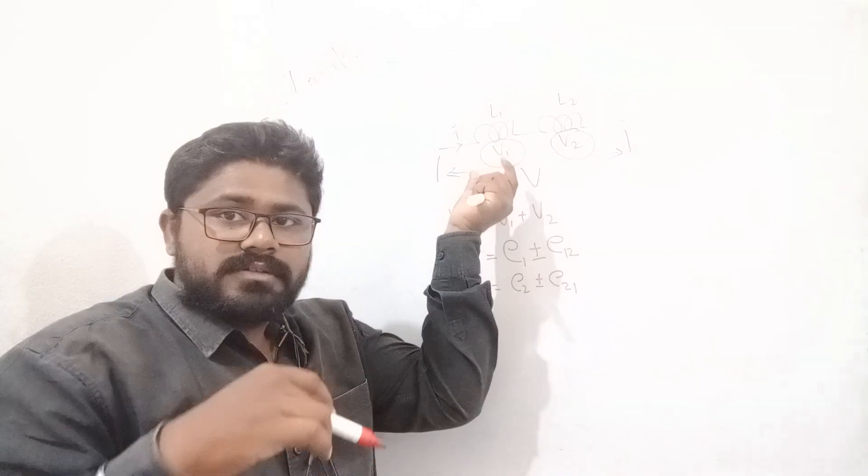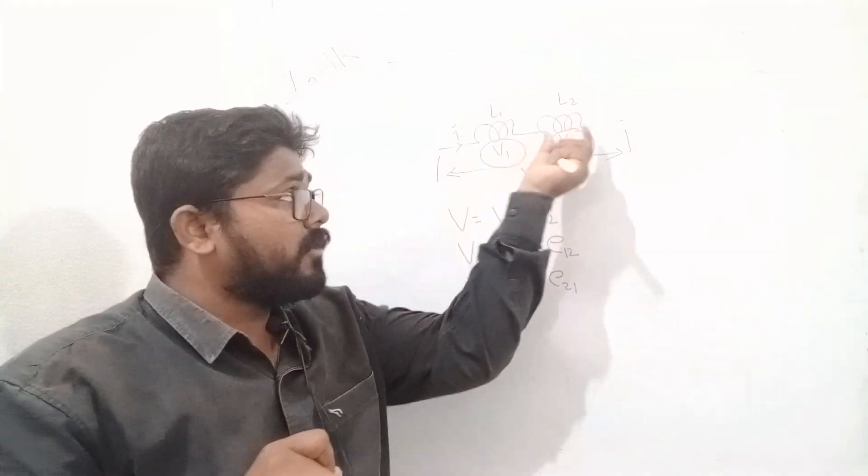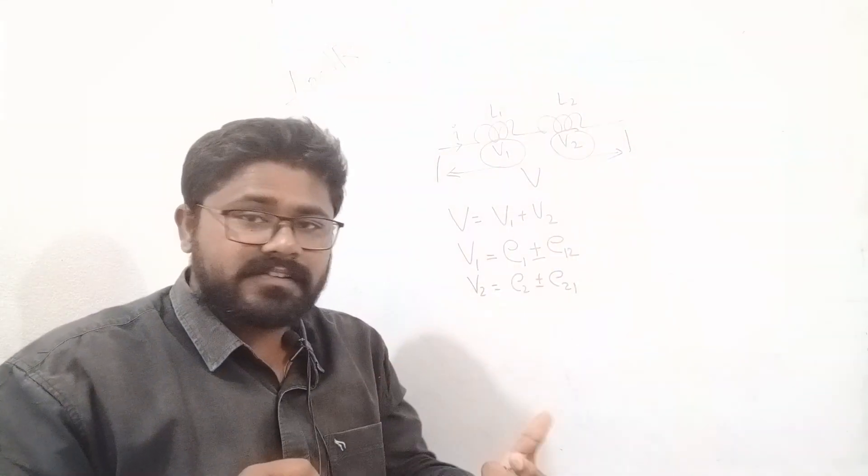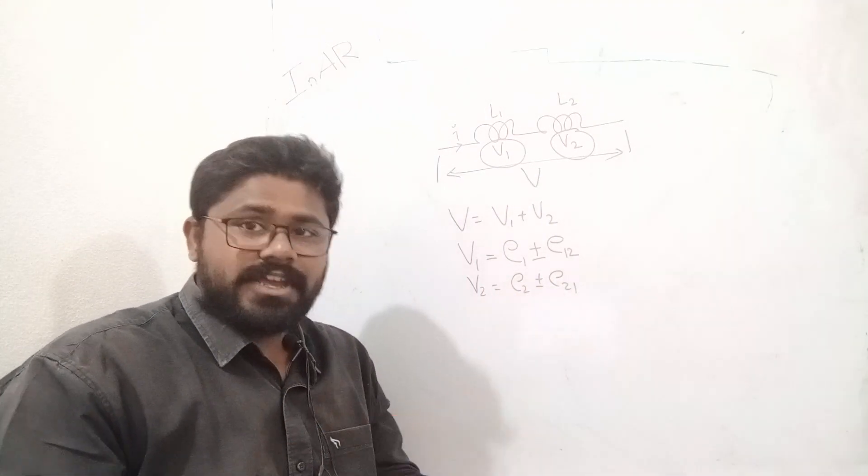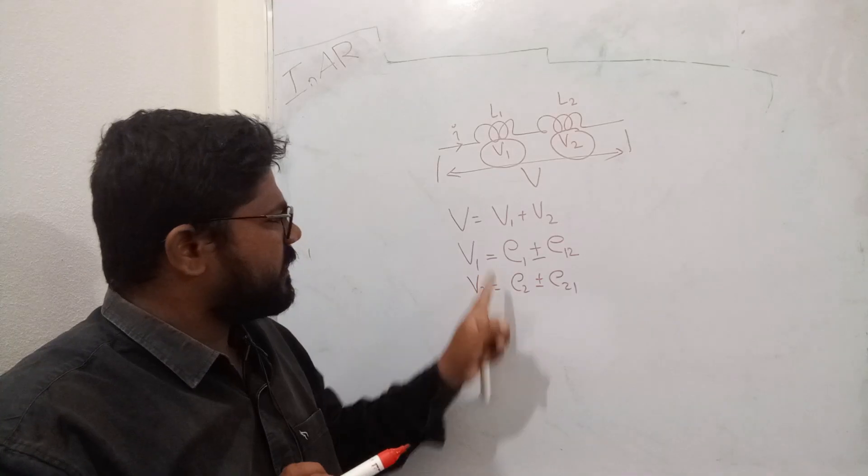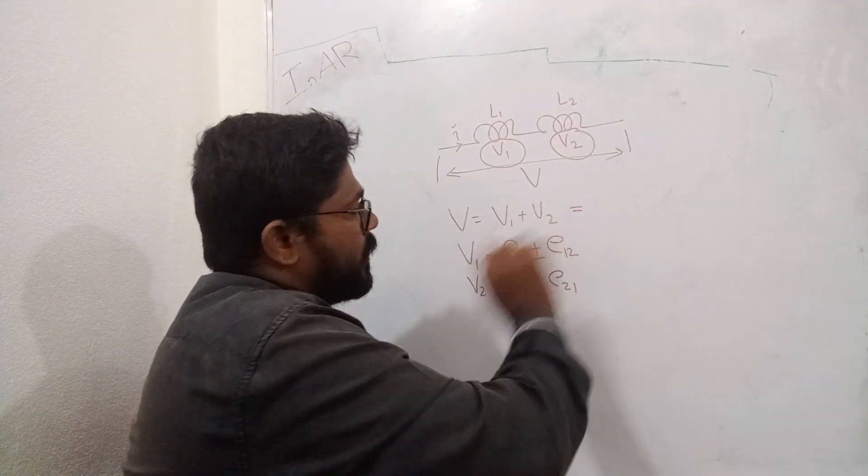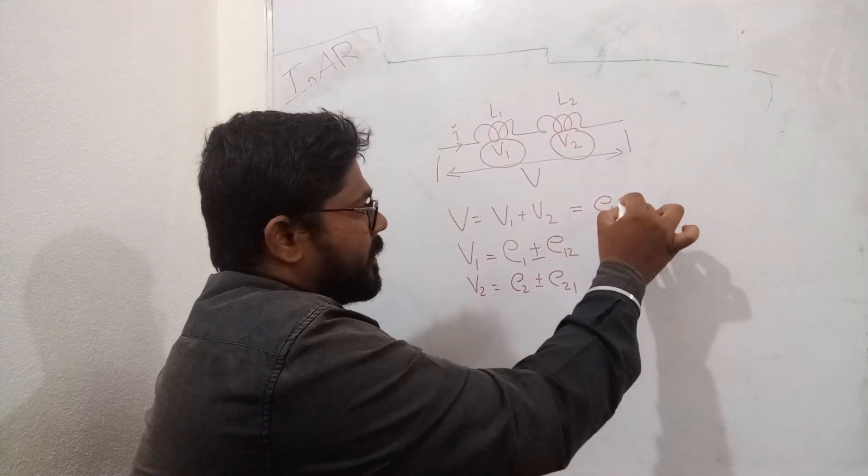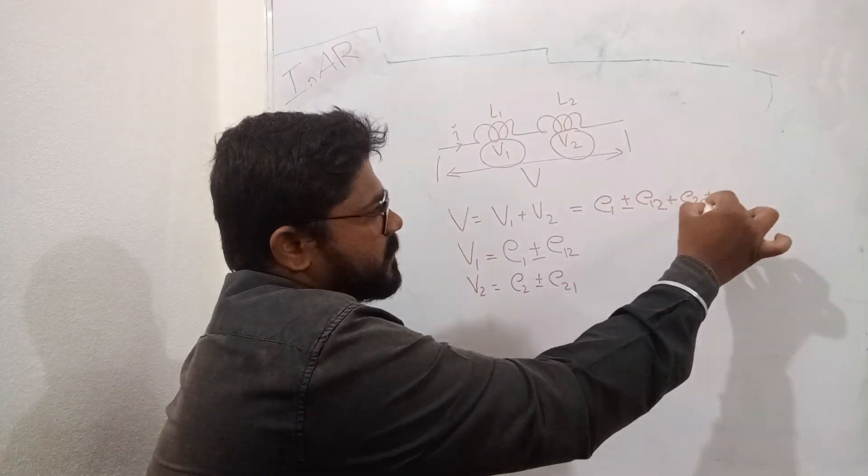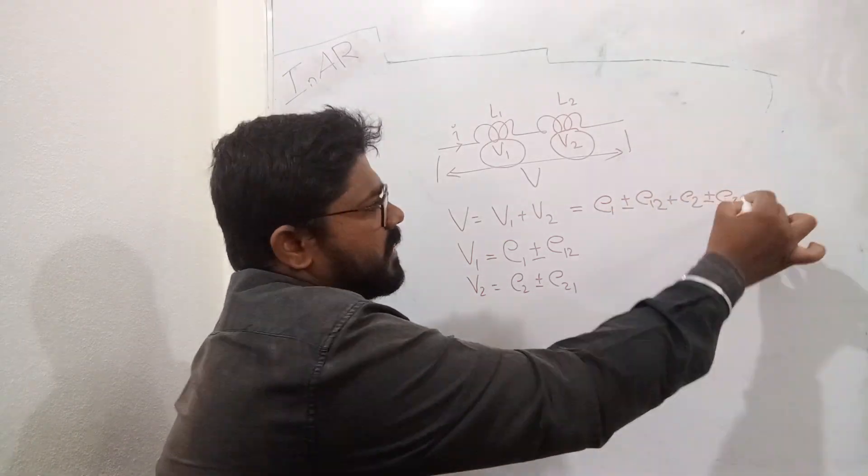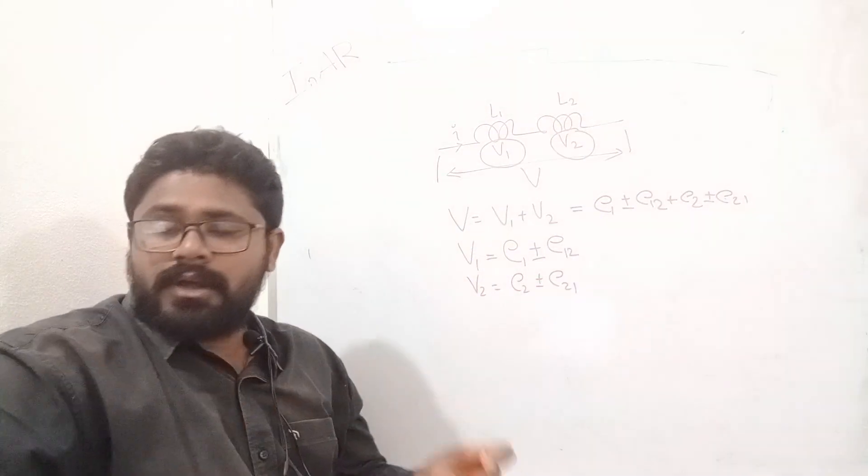First coil creates flux. Second coil is linked to create flux. So, this is going to look something like this. This is E1 plus or minus E12 plus E2 plus or minus E21.